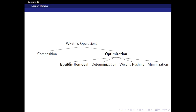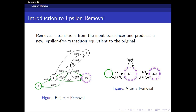This is where we are now, at the start of the optimization process. First of all, what is Epsilon Removal? To put it simply, given a regular finite automaton, you're going to remove the Epsilon transitions. For example, this particular transition from state 3 to 2 is an Epsilon transition because it requires Epsilon as an input. The Epsilon Removal algorithm takes such a transducer, removes all the Epsilon transitions, and then creates an equivalent Epsilon-free transducer.